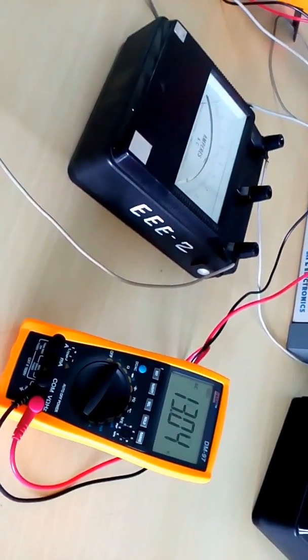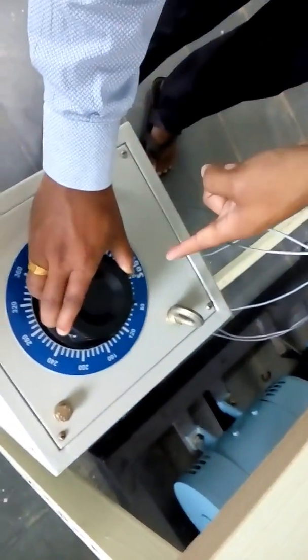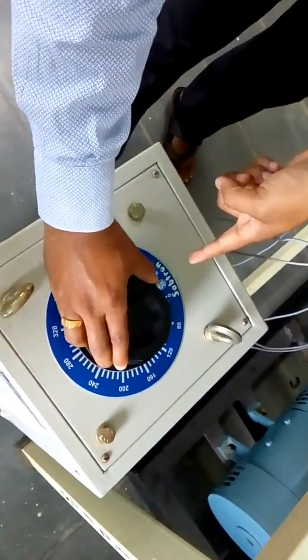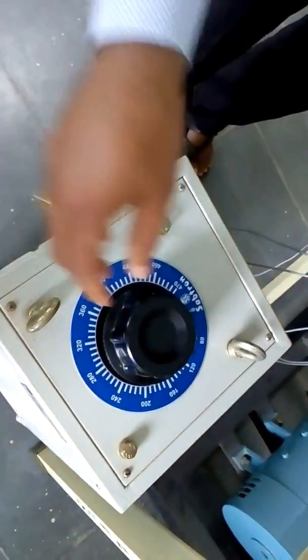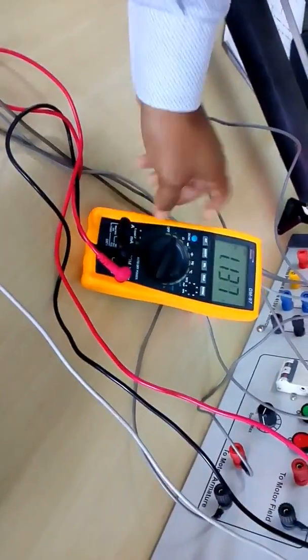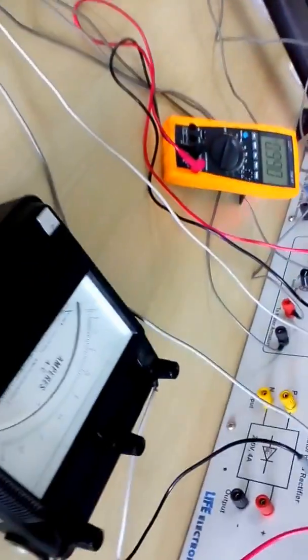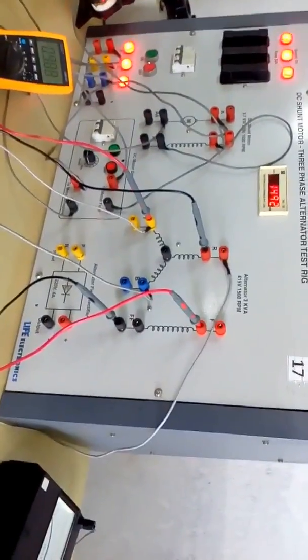After taking the readings, we need to bring back the auto transformer to the minimum position. Auto transformer is brought back to the minimum position, where voltage is reduced, and the procedure is conducted in a reverse manner to shut down the system. Thank you.